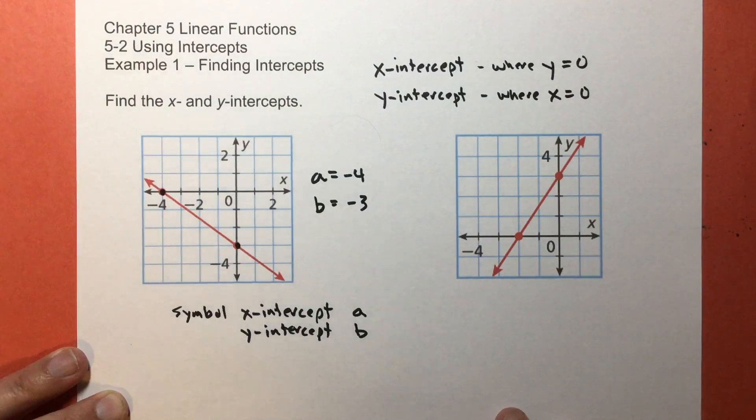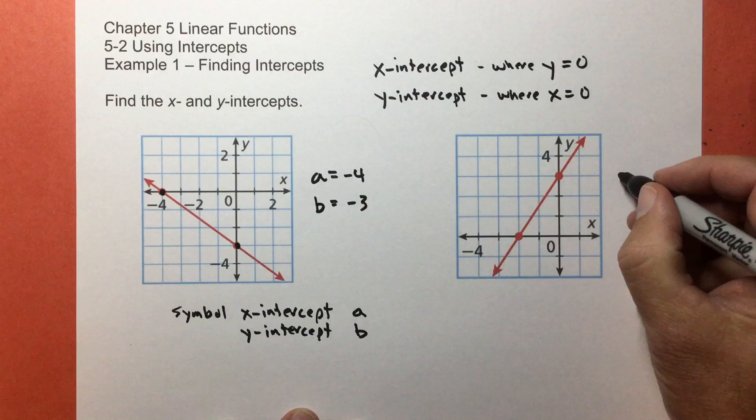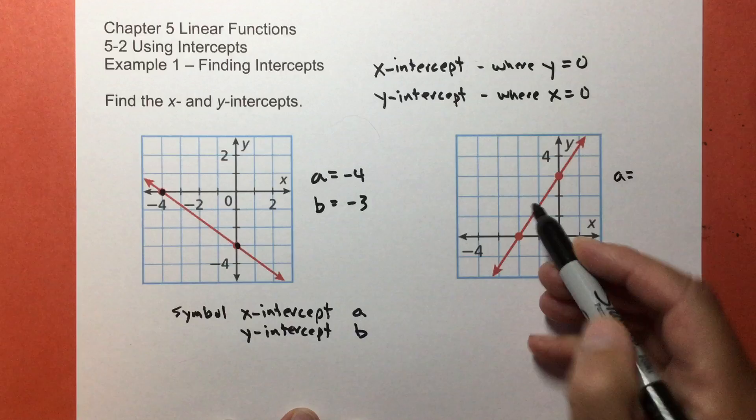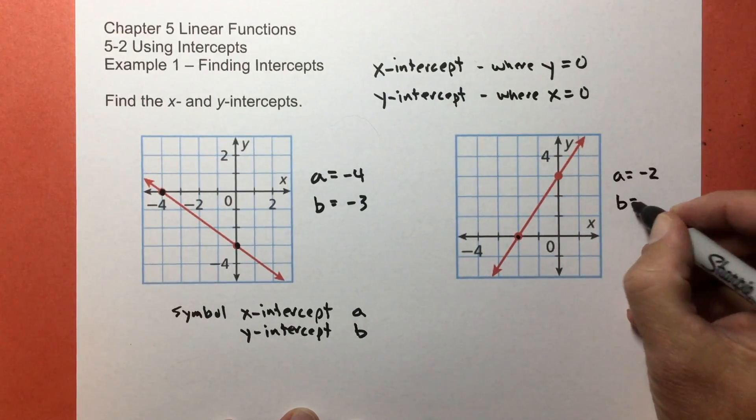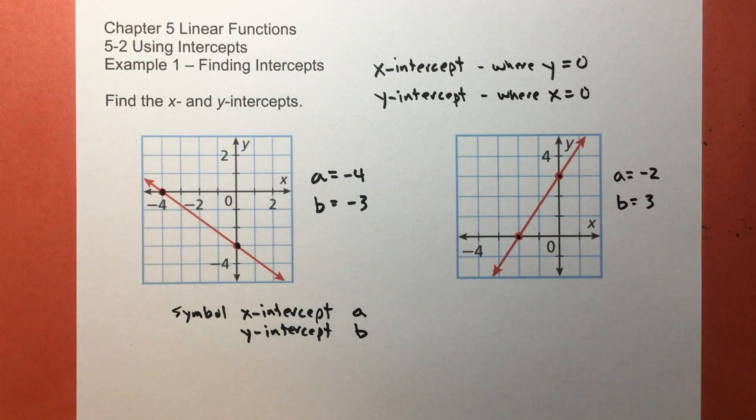So you know what the graph is like, easiest thing in the world. For the other linear function, the x-intercept is right here at negative two, and the y-intercept is right here at three. Take a moment to pause and look at that. That's all that you have to do when you see it as a graph. But of course, there's going to be more than just that.